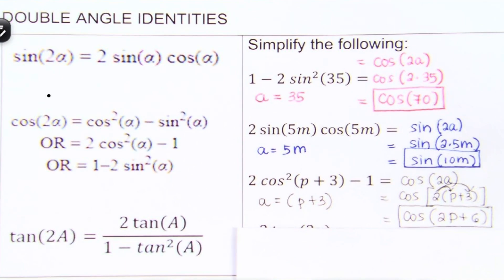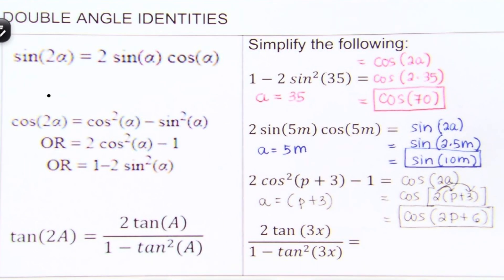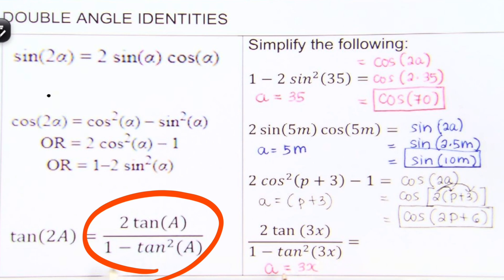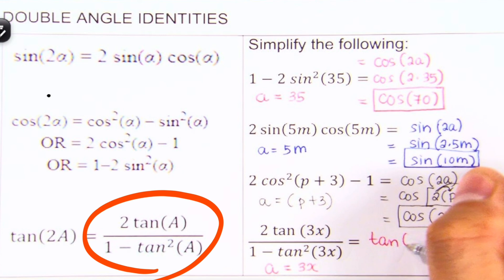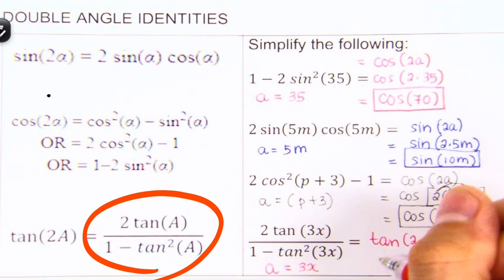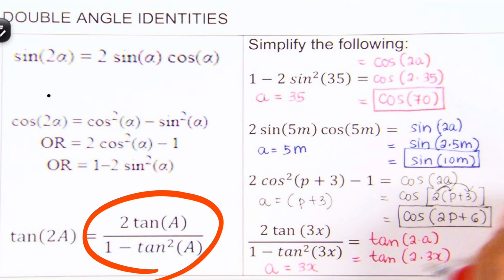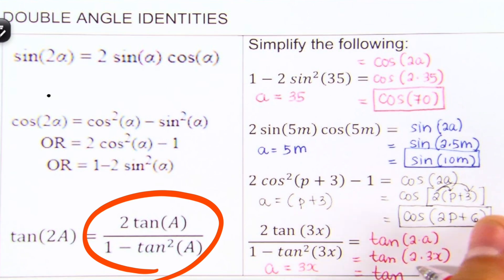Let's move on to the next example. This example matches up to the tangent double angle identity, and we can say that our A is equal to 3X — that's the value inside the parentheses. Therefore, this whole expression is equal to tangent 2A. Since our A is 3X, plugging in gives us tangent of 2 times 3X, which comes out to tangent 6X.